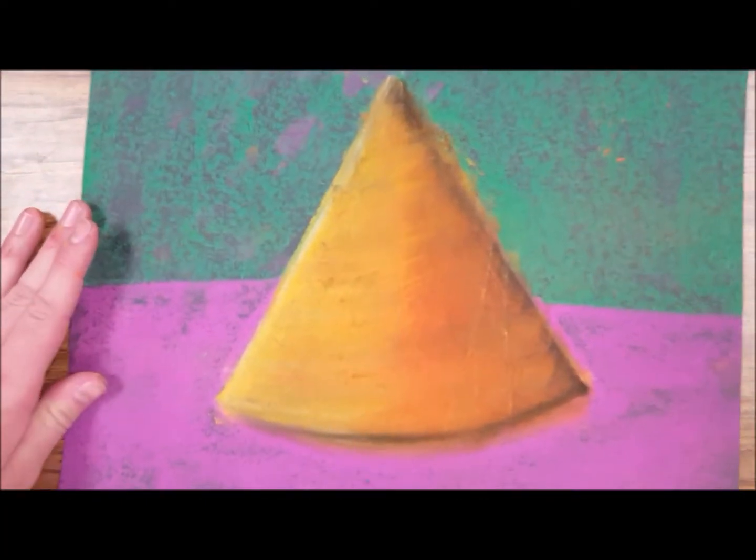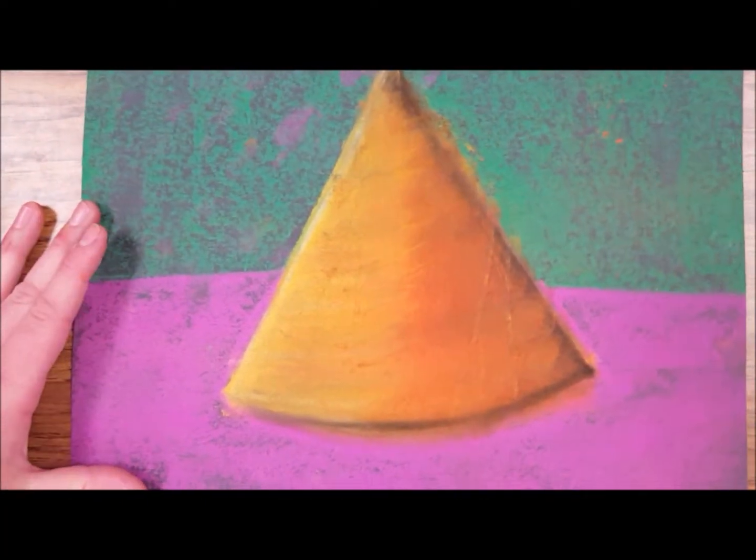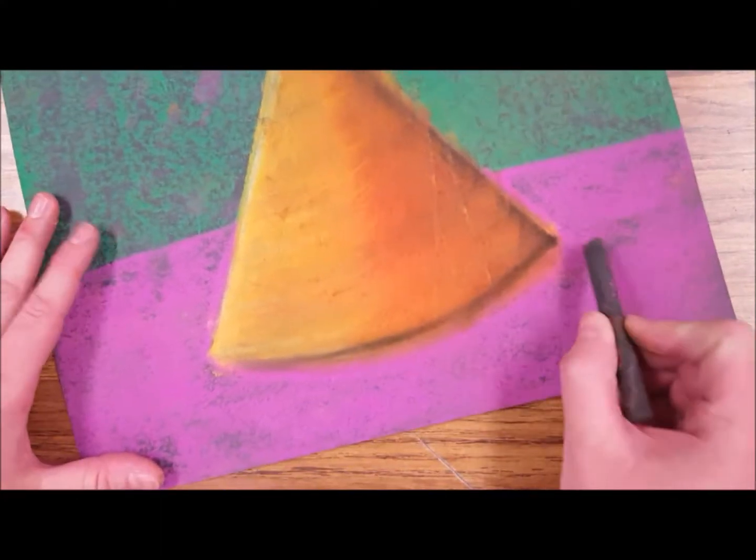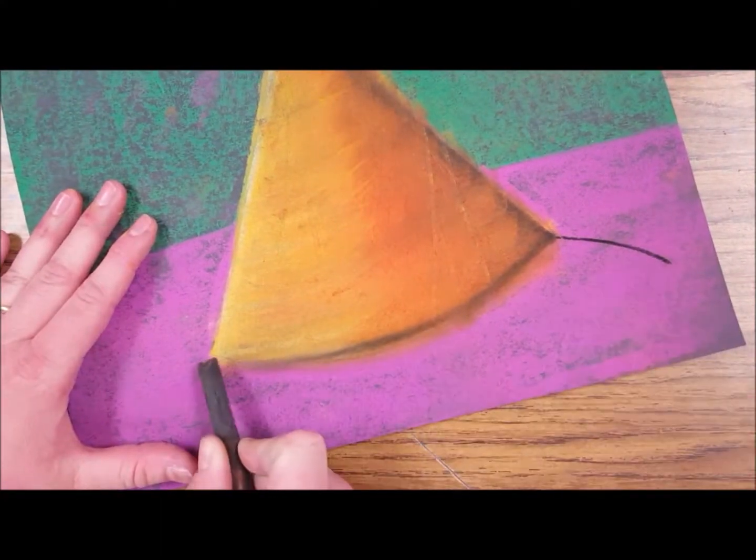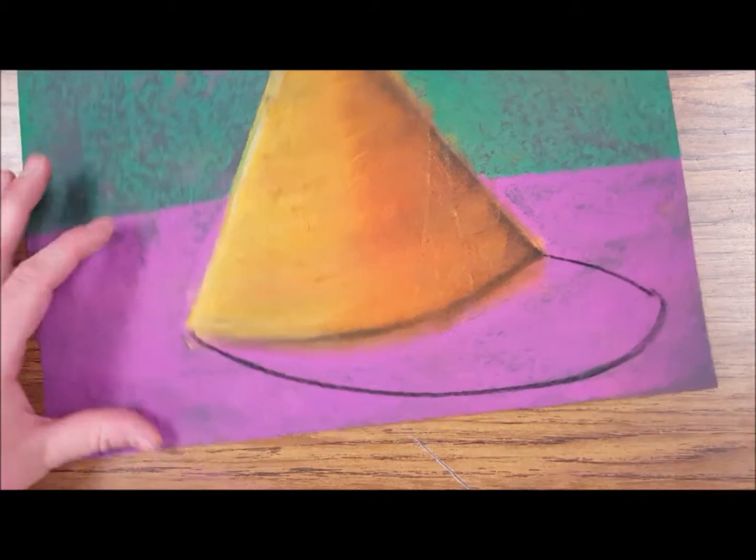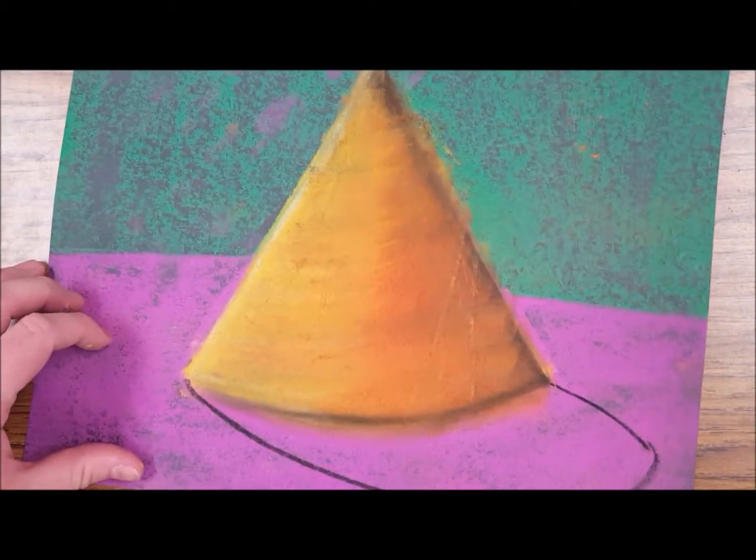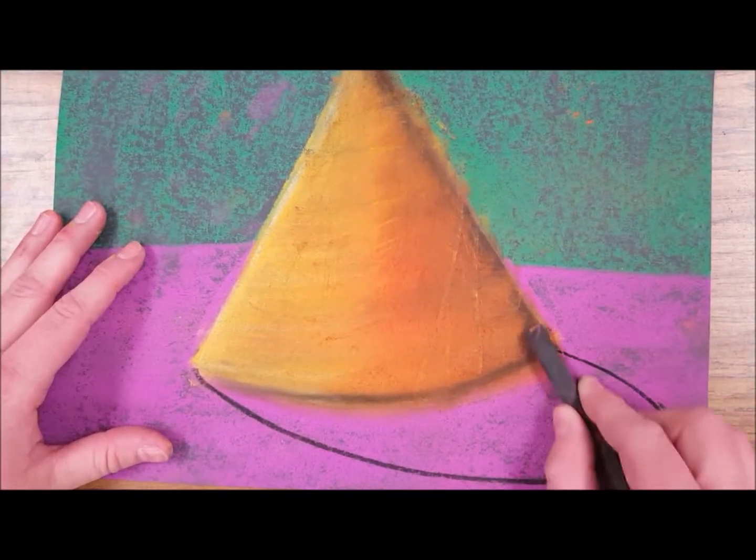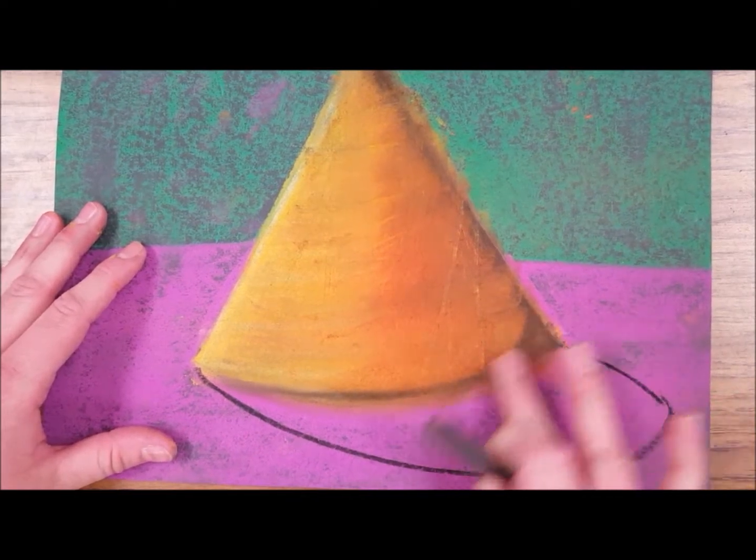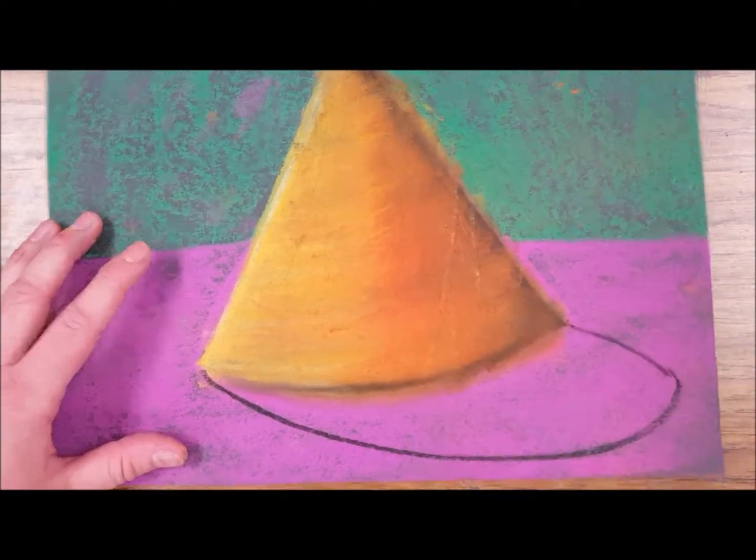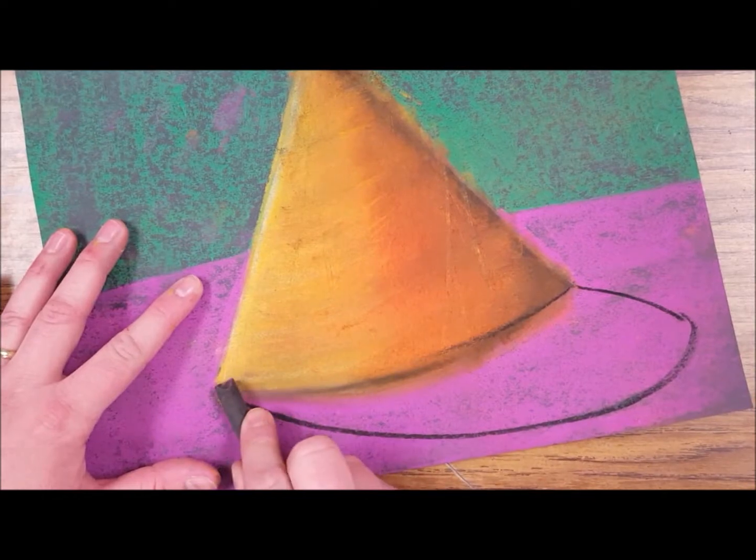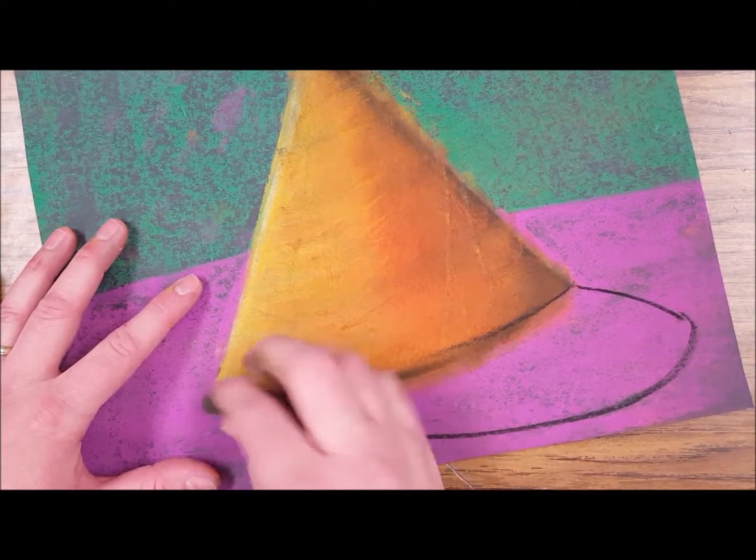The last thing you could do is add a shadow. Now that shadow should come out from the bottom of your shape and kind of curve to one direction towards that darker side. So darkest, closest to the shape.